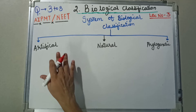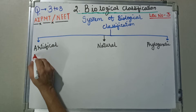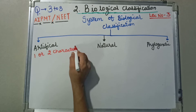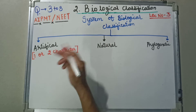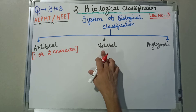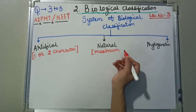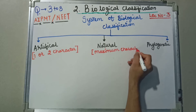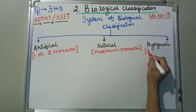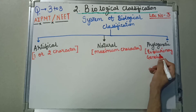Now let's see the basis of classification — on what grounds each was classified. During artificial classification, one or two characters were considered for classification. Second, natural classification was based on maximum morphological characters. Third, phylogenetic was based on evolutionary and genetic affinities.